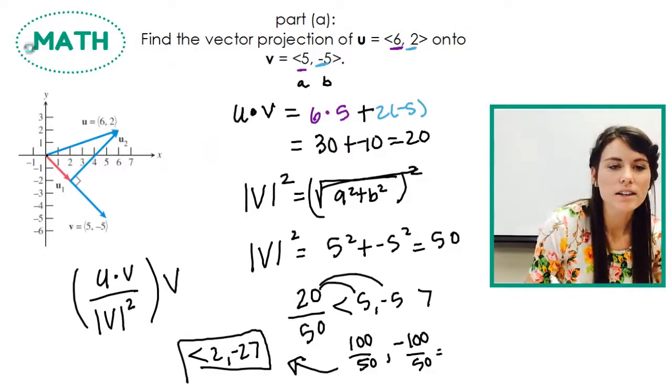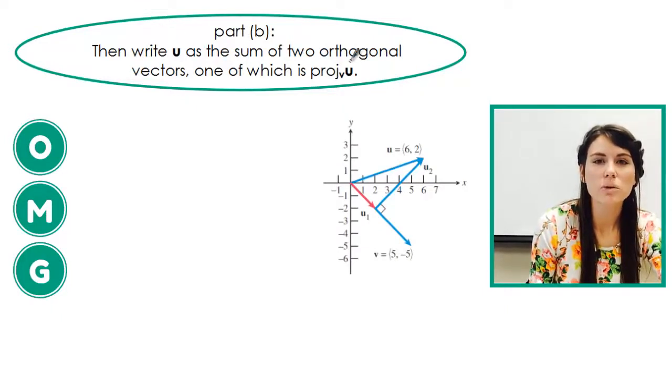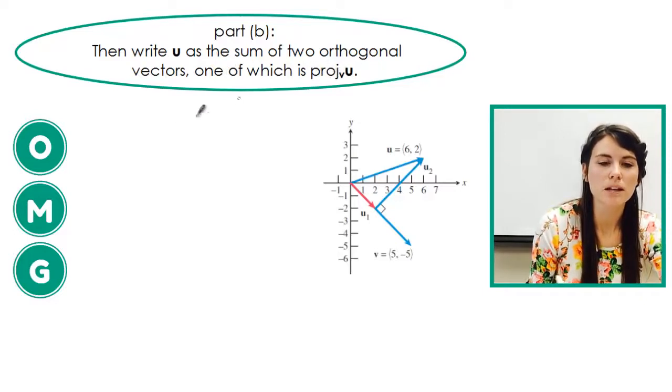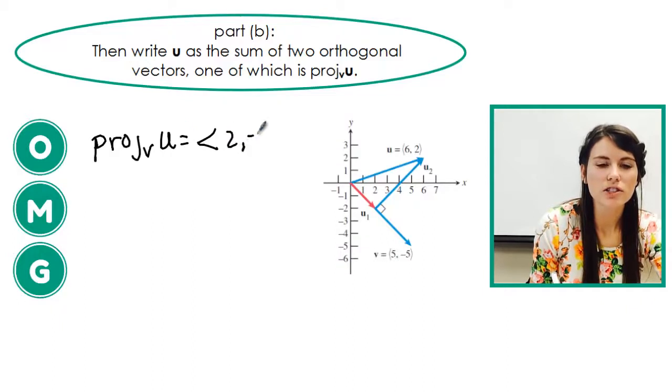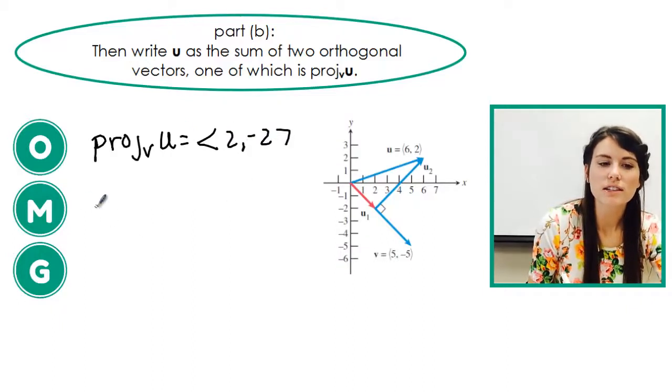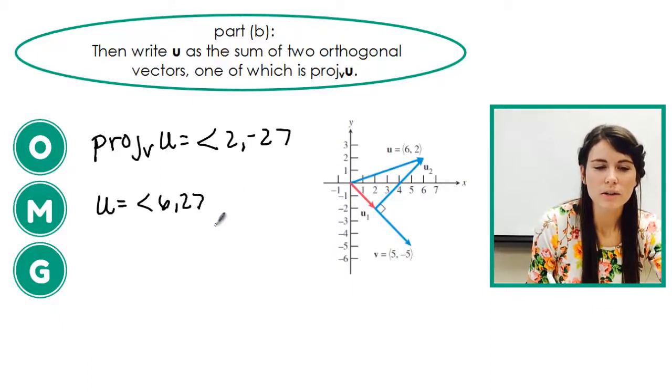The next part is trying to figure out how to find u as the sum of two orthogonal vectors. One of which needs to be that projection vector I just made. So I'm going to write that down. I'm going to write down that the projection vector of u onto v gave me that 2 negative 2. And then my mission is to figure out, okay, can I write u, so u is 6 comma 2, as two vectors. I'm going to call them u1 plus the projection vector here. So projection of v onto u, or u onto v.